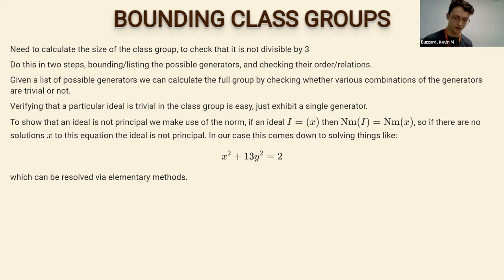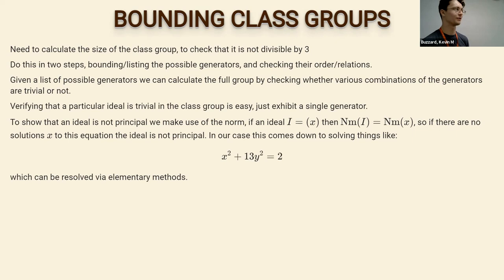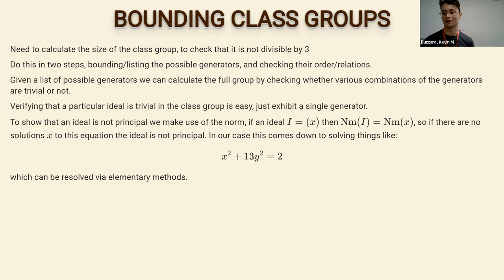Showing ideals are non-principal seems a little bit harder. In the quadratic field case, there's a norm — a binary homogeneous quadratic — and to show an ideal is non-principal we check that the norm of the ideal cannot be the norm of some element. Using the Hasse principle, we check which prime to look at and then check all cases at that prime.